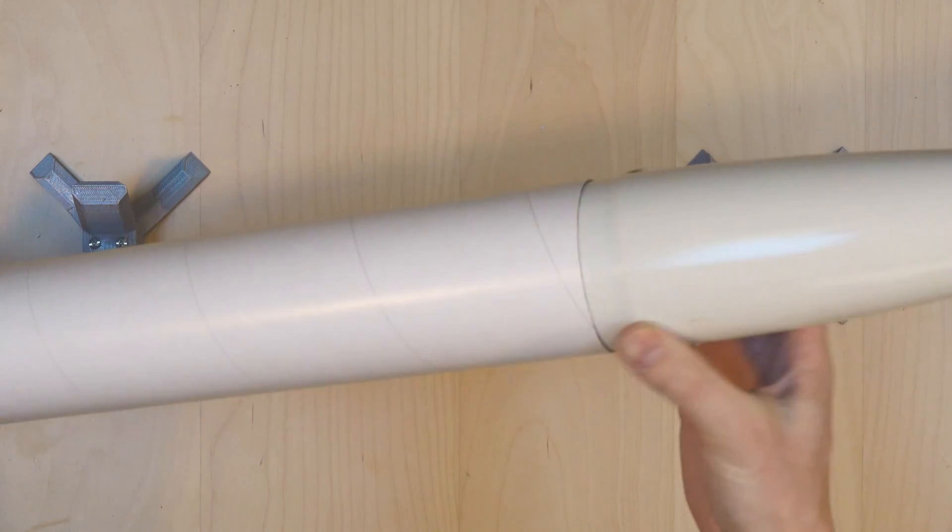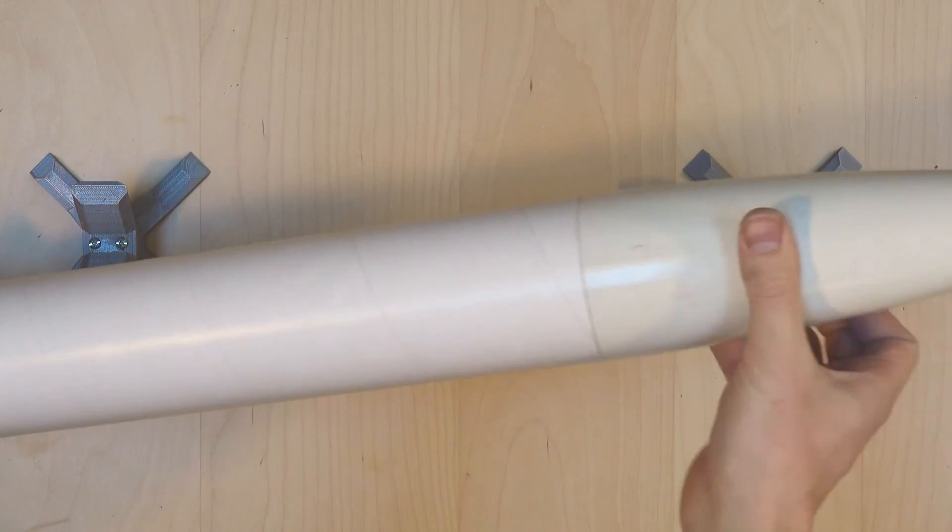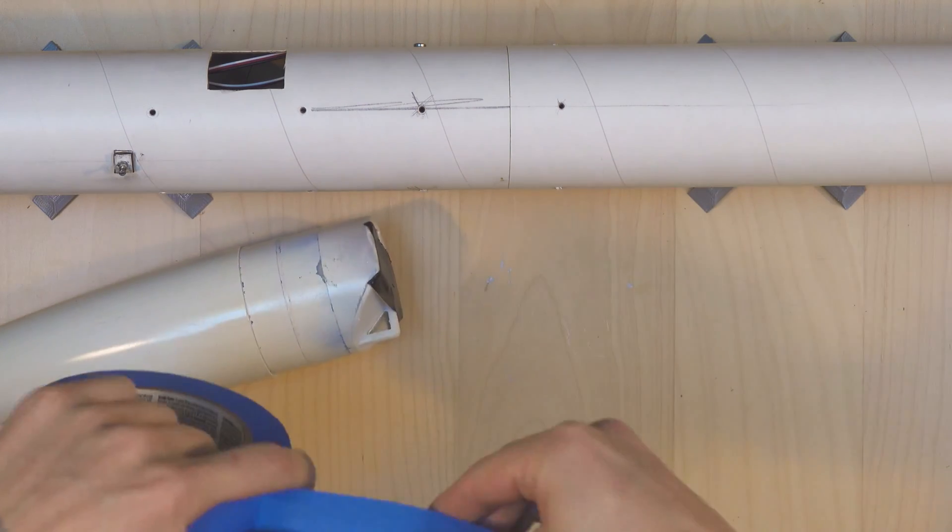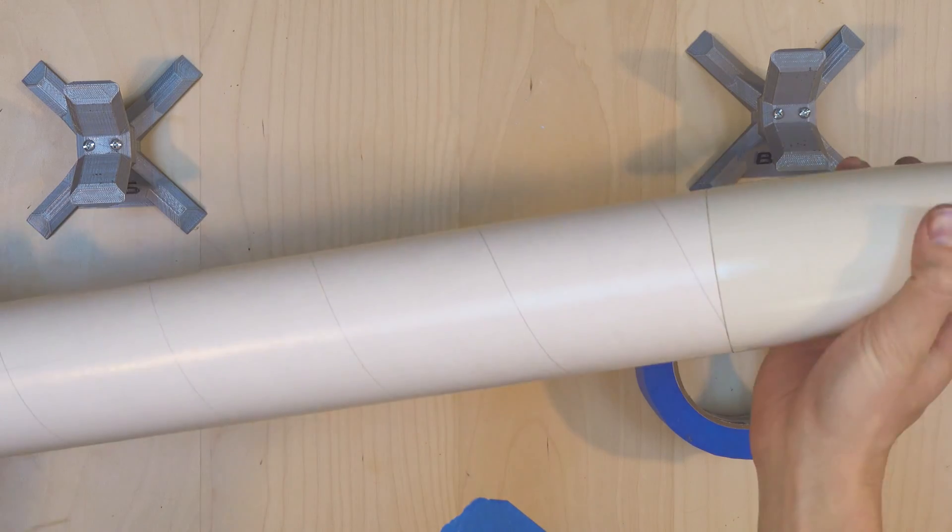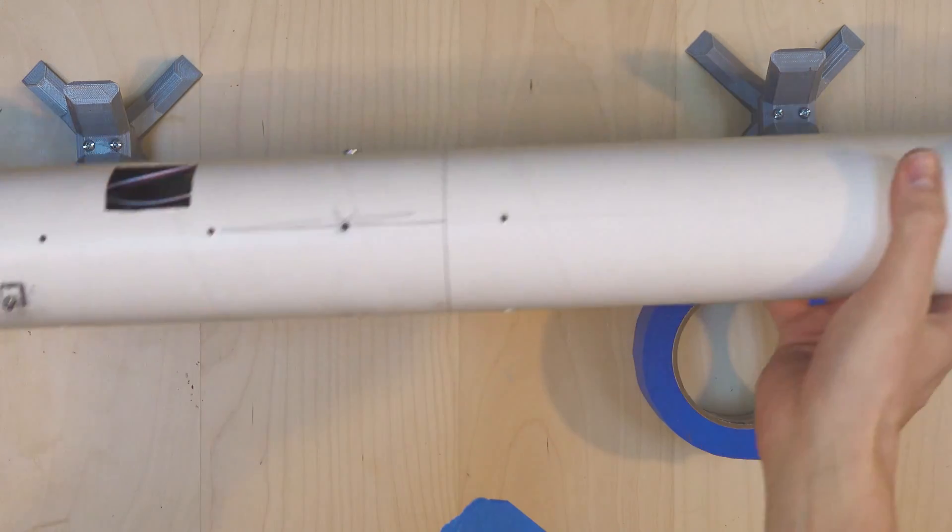Before we get painting, we're going to finish up the parachute assembly. Our nose cone is a little bit loose, so we'll take some blue tape and apply it around the edge. We want enough friction so that it comes off fairly easily, but not if you were to just tip it upside down.